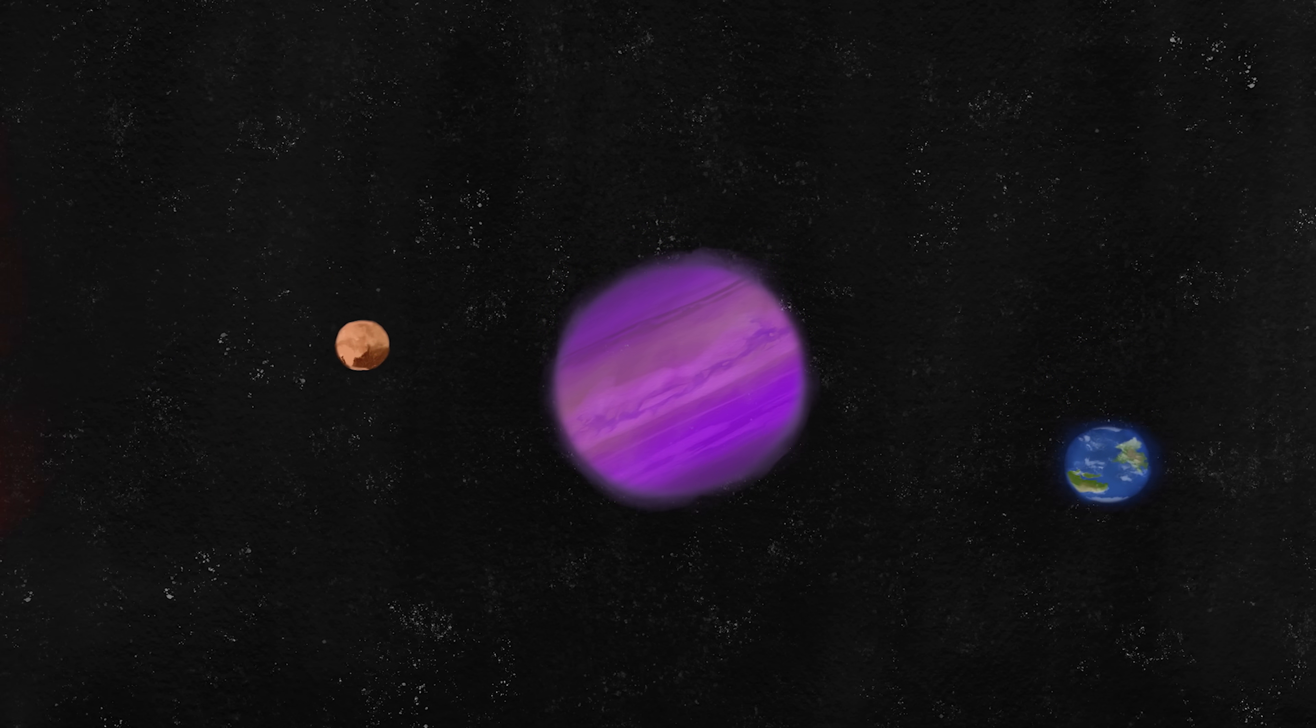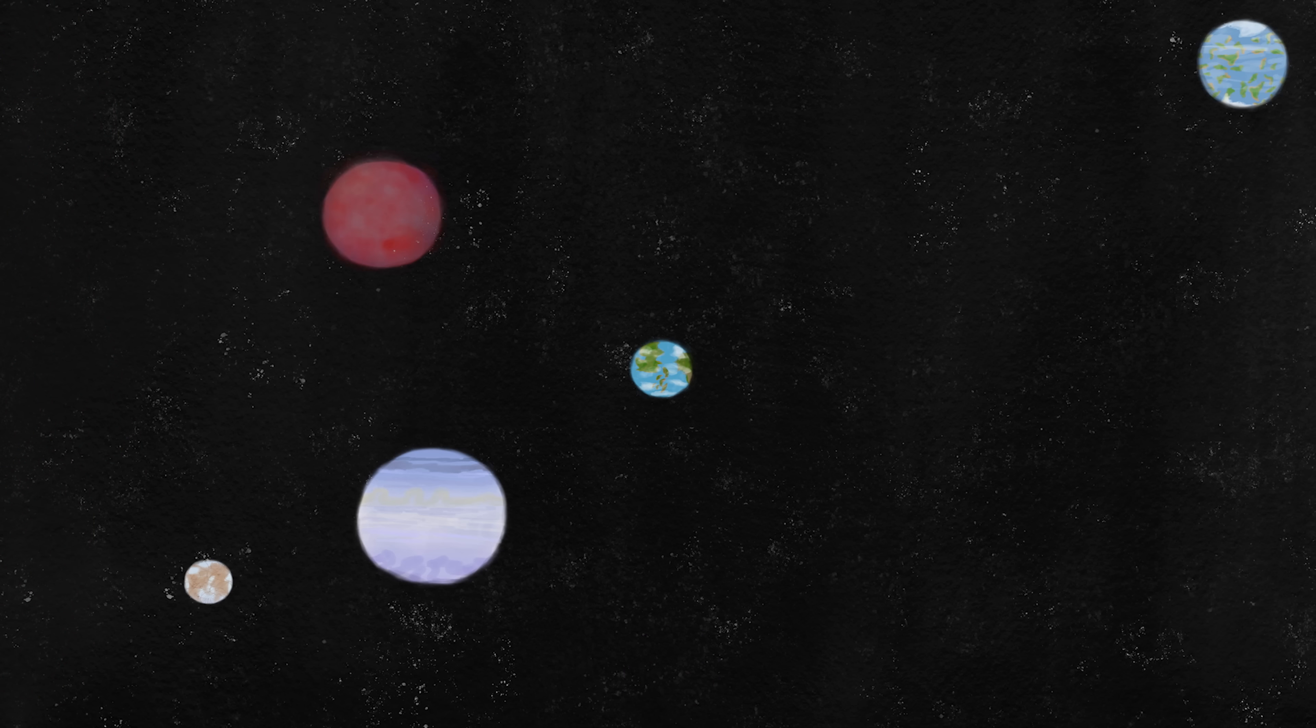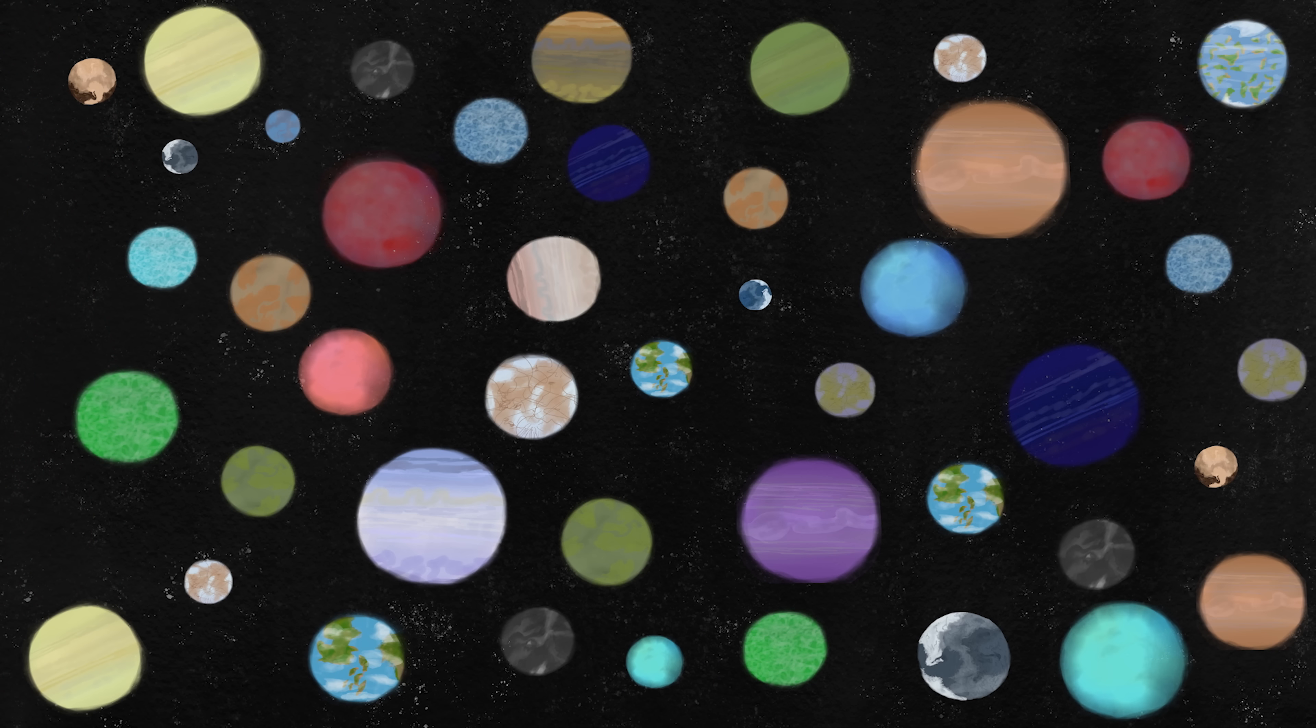Exoplanets. They're just like regular planets but found in other planetary systems besides our own. So far, over 3,600 discoveries have been confirmed since 1992.